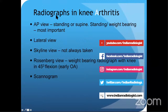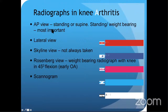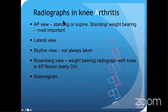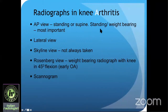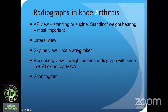The radiograph taken for knee arthritis is the AP view — obviously the most common view — either standing or supine. Standing, or weight-bearing, has more importance in arthritis because you can actually judge joint space narrowing when the patient is standing. The lateral view and skyline view are not always taken, but if you want to see the patellofemoral compartment, that's when you use them.